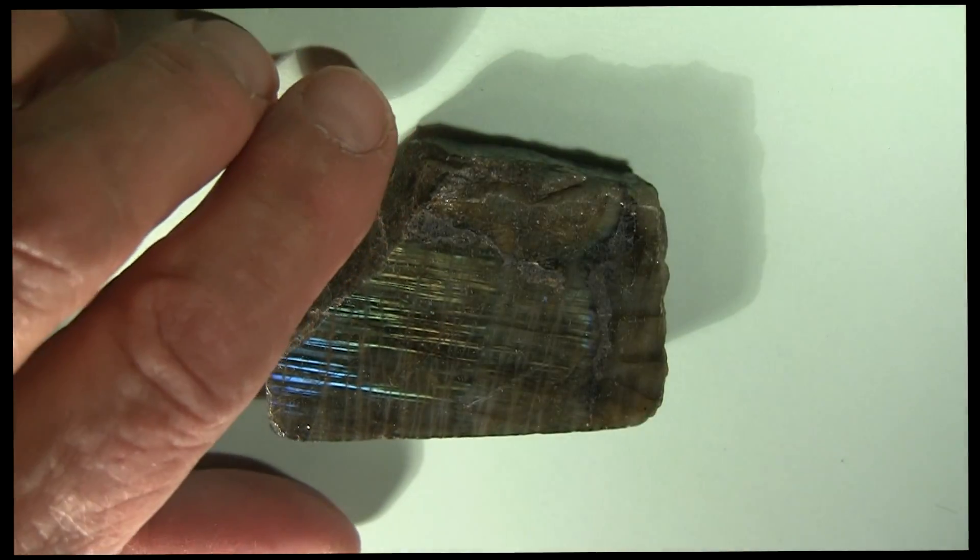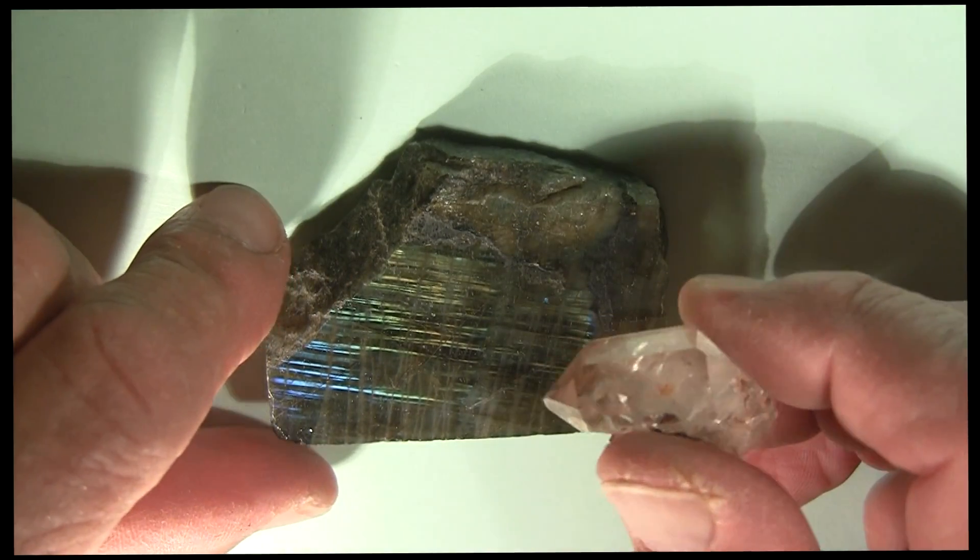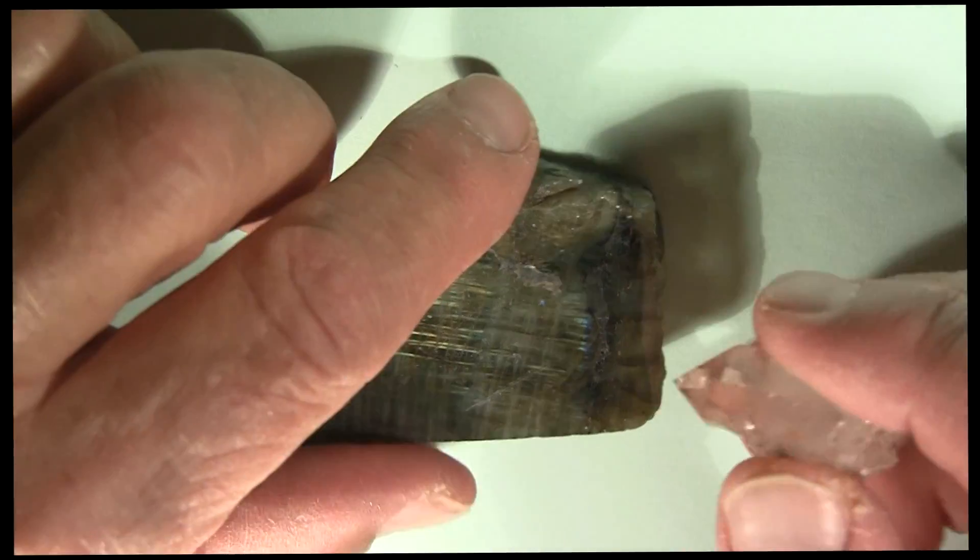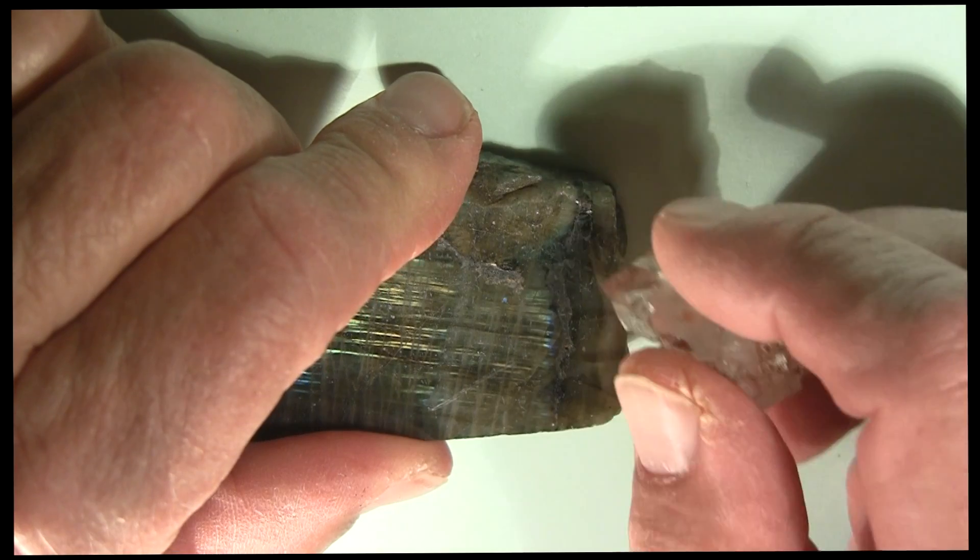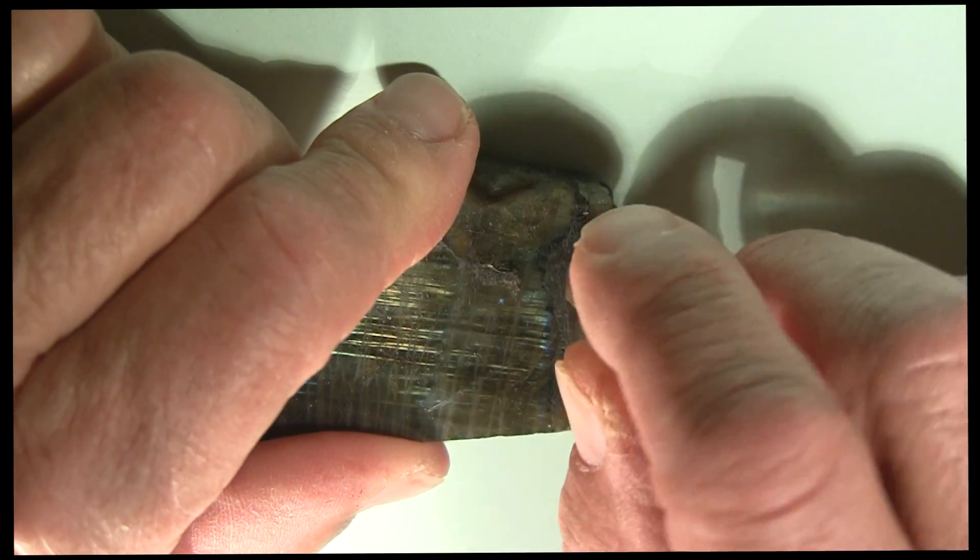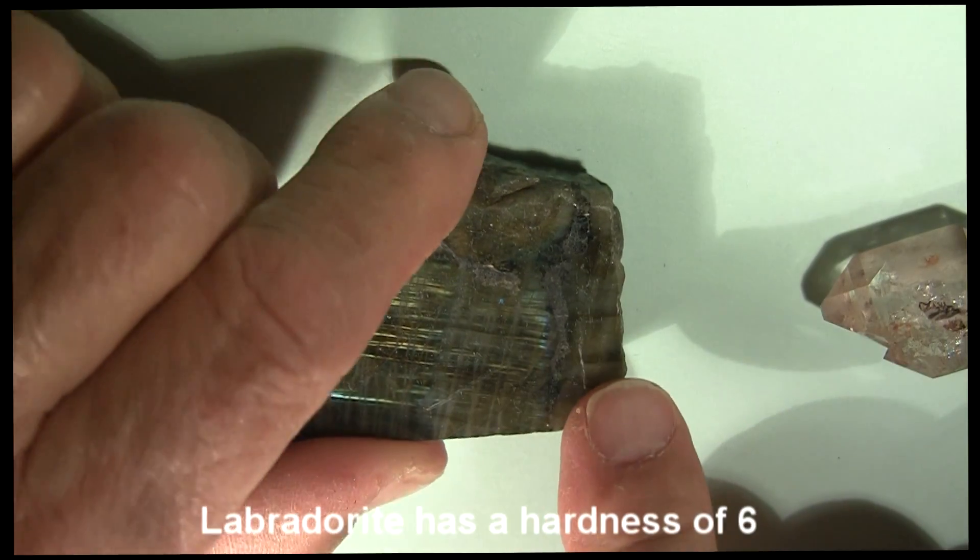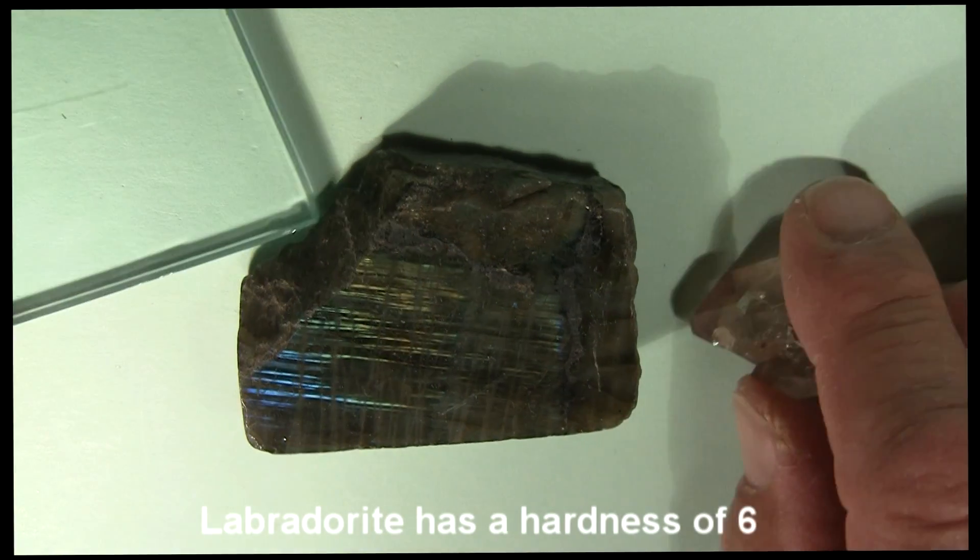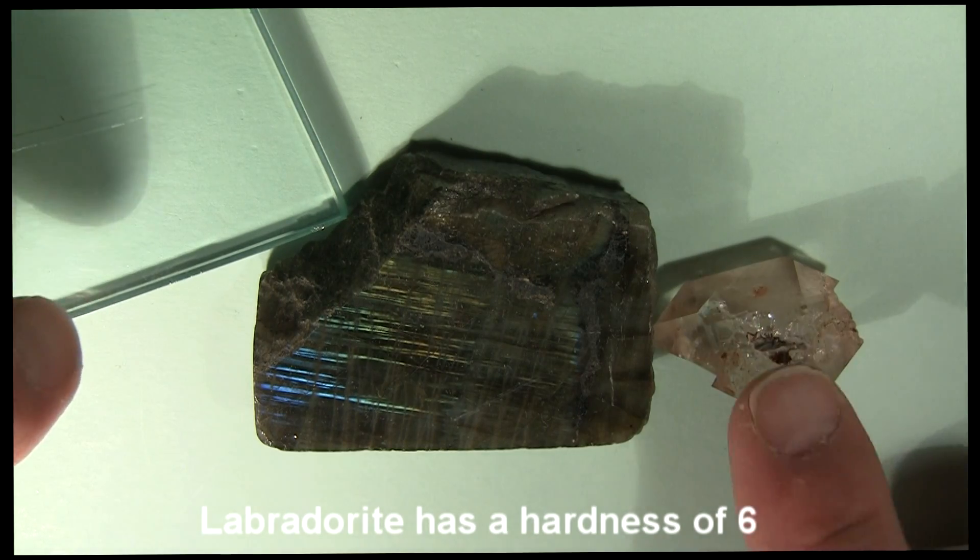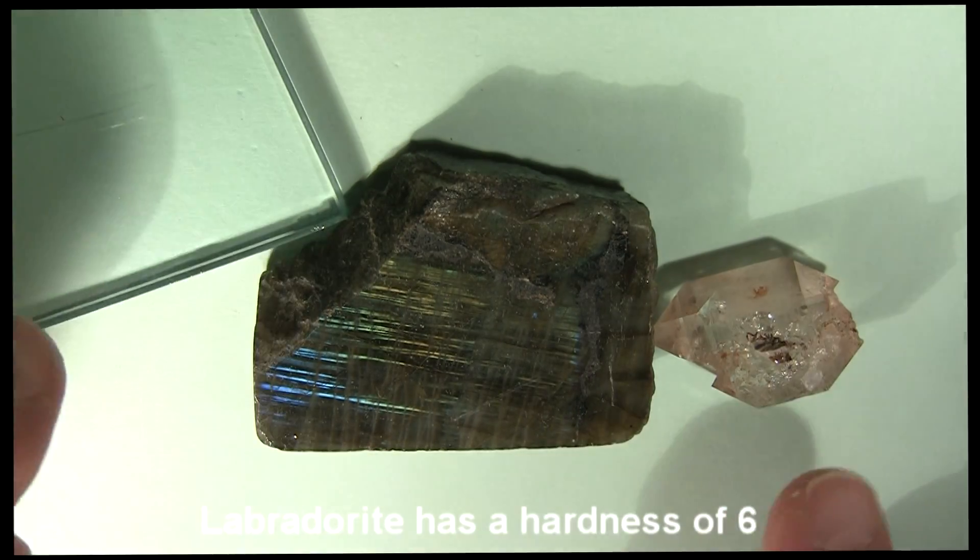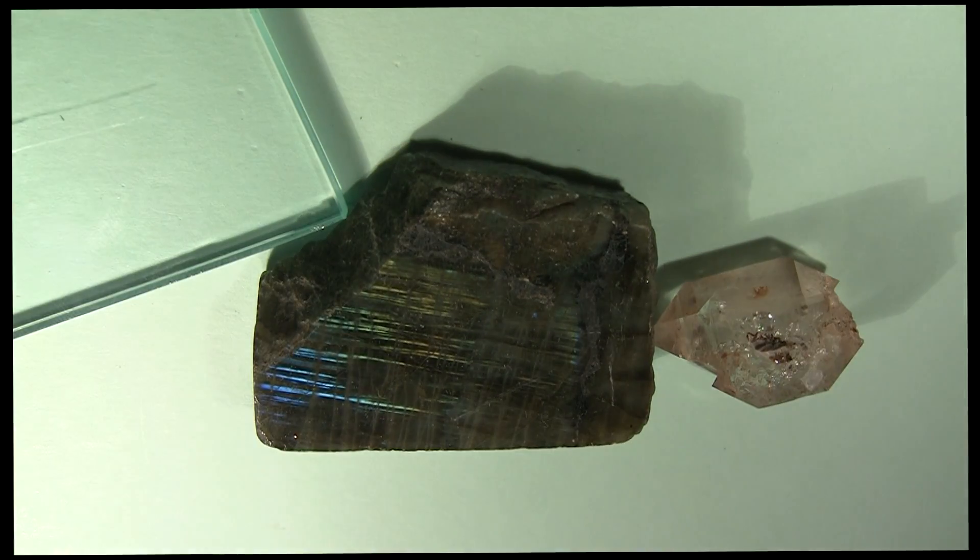Now let's try quartz on here. Here's a quartz crystal with a nice point, and we'll draw that across the plagioclase. Pick a side over here. I can feel it digging in, and it definitely leaves a scratch on the surface. So based on the test here of glass and quartz, plagioclase feldspar is between the two, and it comes in with a hardness of 6.